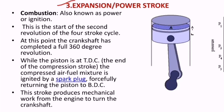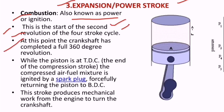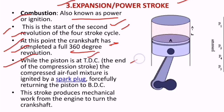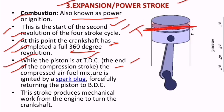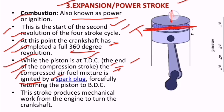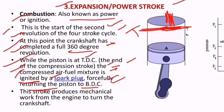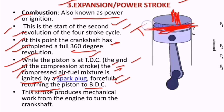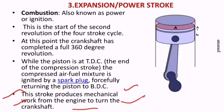The third stroke is the expansion stroke, also known as the power or ignition stroke. This is the start of the second revolution of the four-stroke cycle. At this point the crankshaft has completed a full 360 degree revolution while the piston is at TDC — the end of the compression stroke. The compressed air-fuel mixture is ignited by a spark plug, forcefully returning the piston to BDC. Because of this combustion the piston moves downwards. This stroke produces mechanical work from the engine to turn the crankshaft.